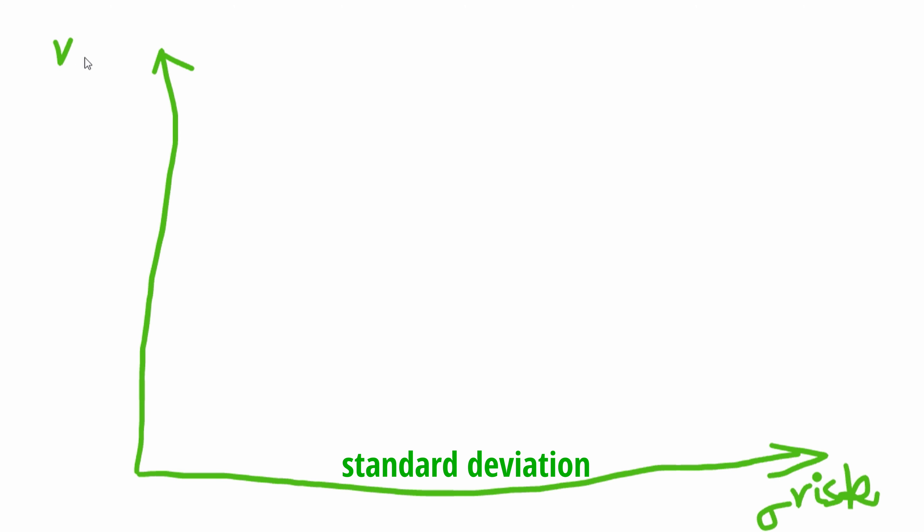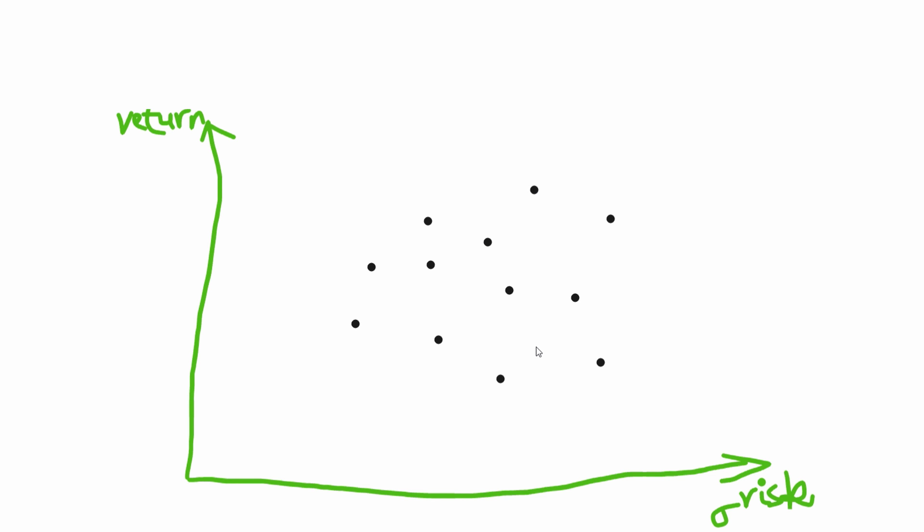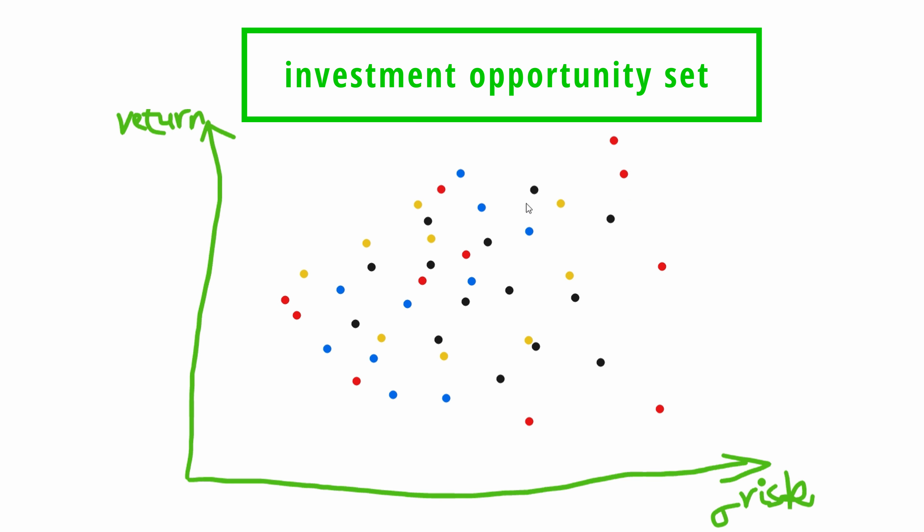Since investing is a trading of risk for returns, let's look at the risk-return trade-off chart. The x-axis represents the standard deviation, which is a statistical metric measuring how an investment fluctuates from its expected return. The smaller the standard deviation, the less volatile the investment is. A large standard deviation means the return is more dispersed, therefore riskier. So imagine we have all the possible portfolios available to invest in, each with their own risk and return based on historical data — we call this the investment opportunity set.